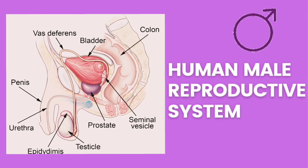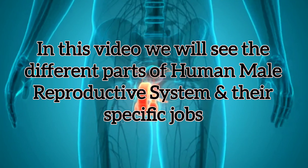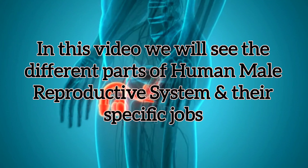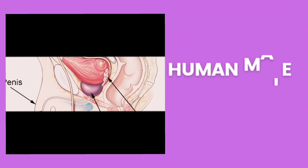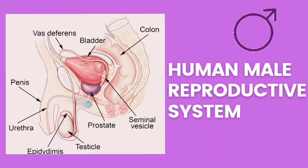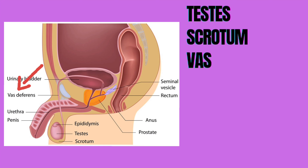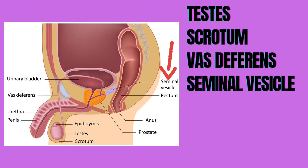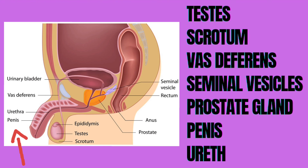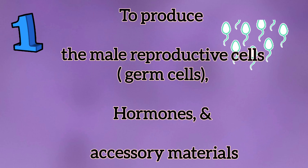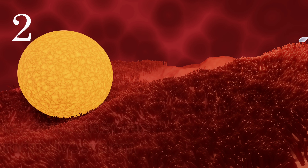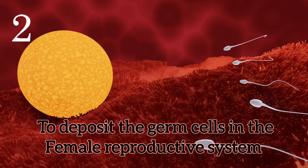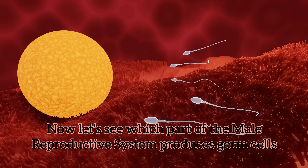In this video we will see the different parts of the human male reproductive system and their specific jobs. The human male reproductive system is made up of different organs like testes, scrotum, vas deferens, seminal vesicles, prostate gland, penis, and urethra. It has two main functions: to produce the male reproductive cells, hormones, and accessory materials, and to deposit the germ cells in the female reproductive system.